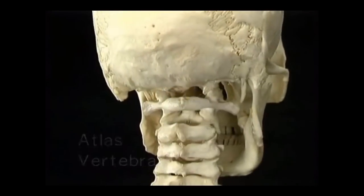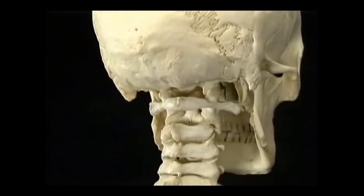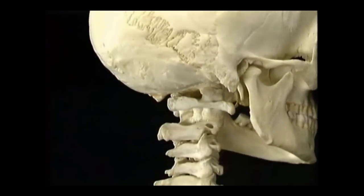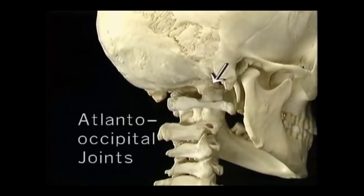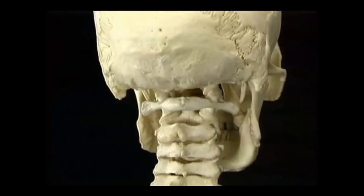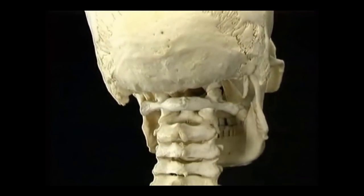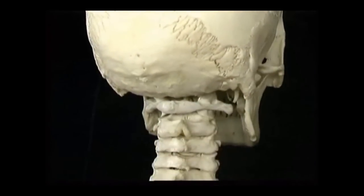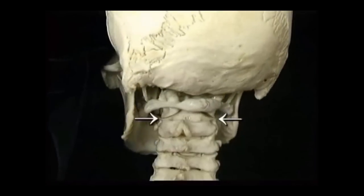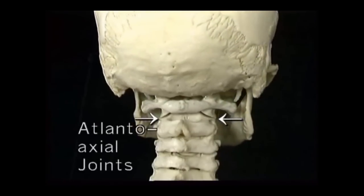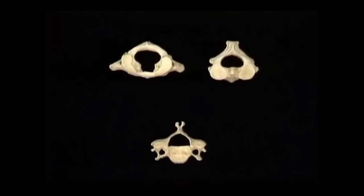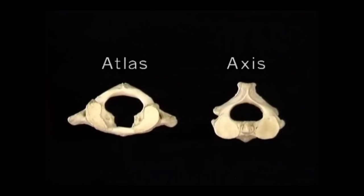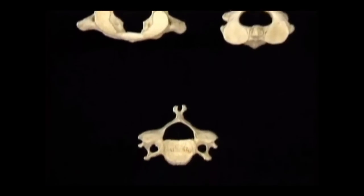Here's the atlas. Here's the axis. These two vertebrae are adapted to allow movement of the head. Forward flexion and extension of the head take place at the atlanto-occipital joints. Lateral flexion of the head takes place at these joints too. Rotation of the head together with the atlas happens here at the joints between the atlas and the axis, the atlantoaxial joints. Because of their special functions, the atlas and the axis differ in several ways from typical cervical vertebrae.